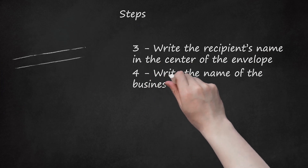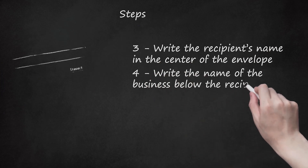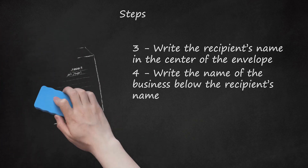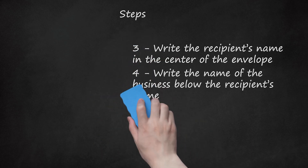Step 4. Write the name of the business below the recipient's name. If you are writing a business letter, you should write the name of the company or organization that the recipient belongs to below their own name on the envelope. However, you should only do this if you are writing a business letter — there is no need to write the name of the business if you are writing a personal letter. For example, if the business is British Imports, Exports, your address would now look like: Mr. Jim Stewart, British Imports, Exports.